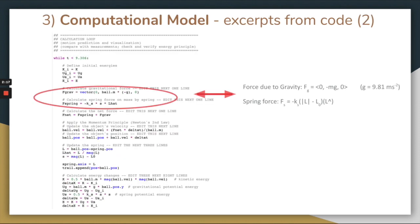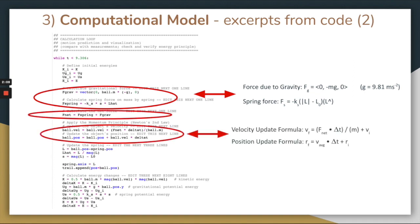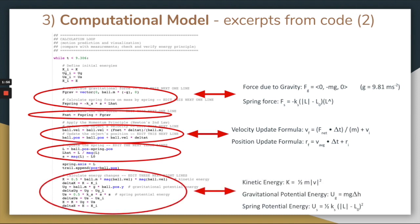In the calculation loop, I calculated the force due to gravity and spring force using the formulas from before, and set the net force equal to the sum of these two forces. I then applied the momentum principle using the two formulas shown here to update the ball's position and velocity. I then updated the spring and recalculated L, L hat, and S, the spring displacement from its equilibrium position. And finally, I calculated the change in each form of energy using the same equations from the previous slide.